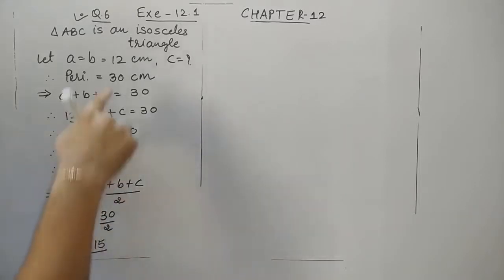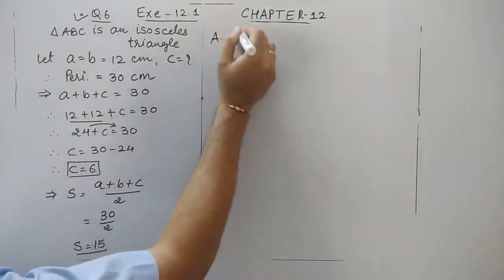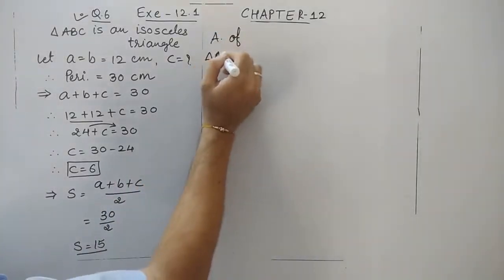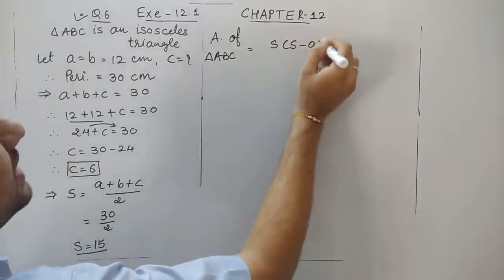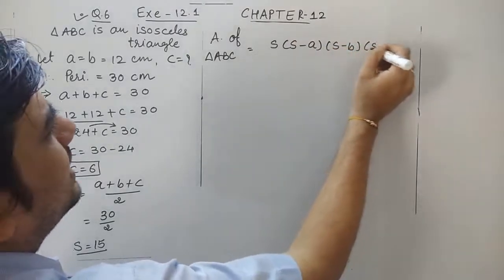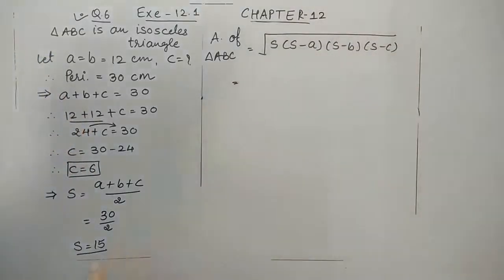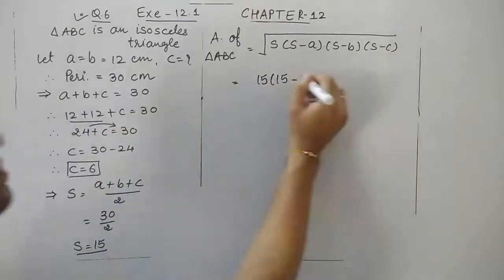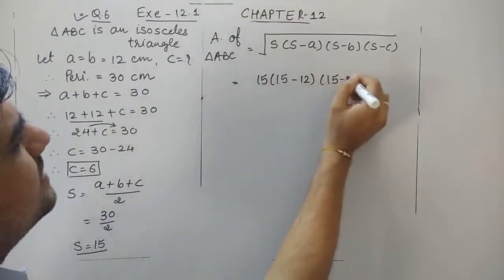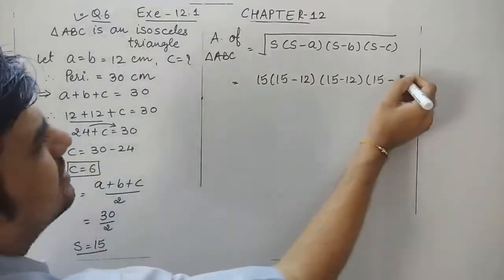The semi-perimeter S equals 15, and this is the largest among all 3 sides. Let's find the area of triangle ABC using Heron's formula: square root of S times (S minus A) times (S minus B) times (S minus C). Substituting: S is 15, 15 minus 12 equals 3, 15 minus 12 equals 3, and 15 minus 6 equals 9.